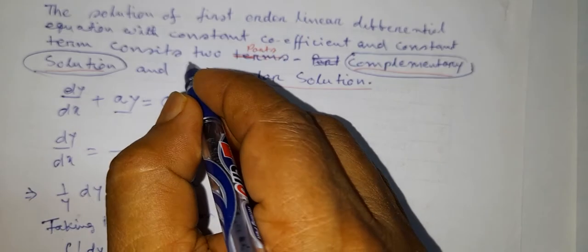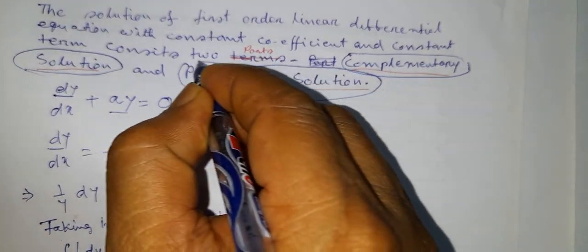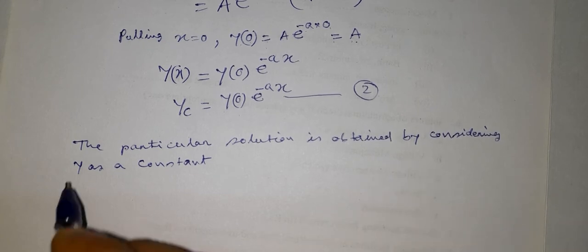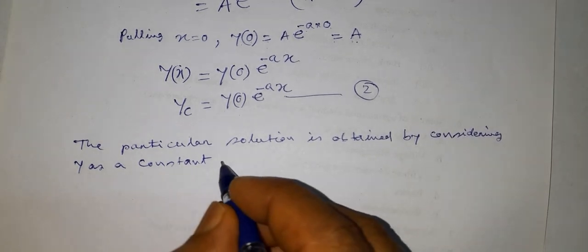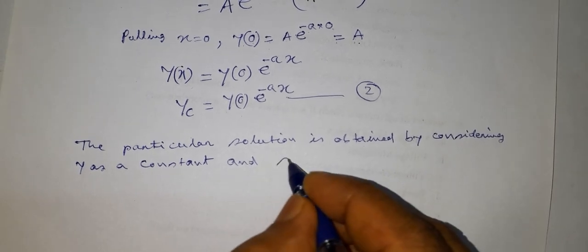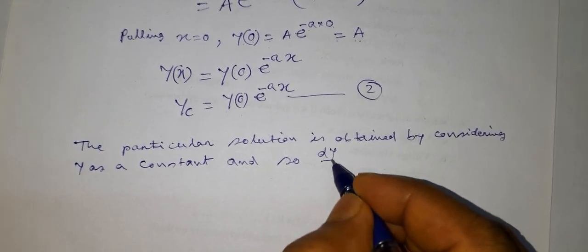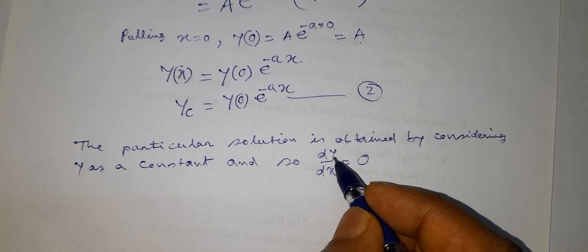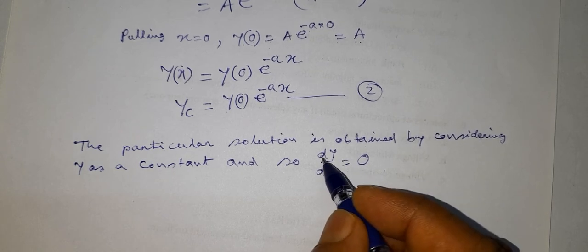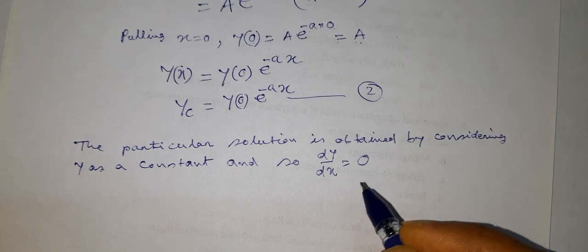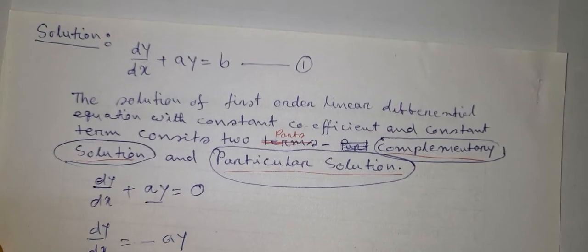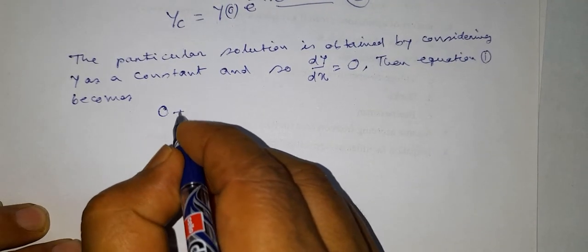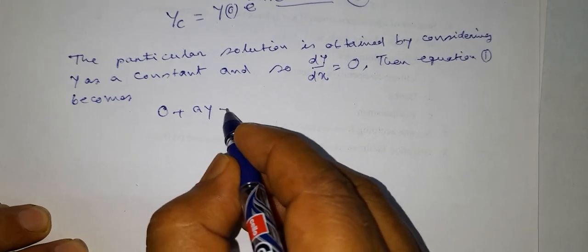Now, the particular solution is obtained by considering y as a constant, so dy/dx will be 0 because here we consider y as constant. The derivative of y with respect to x will be 0. Then equation 1 becomes: 0 + ay = b.